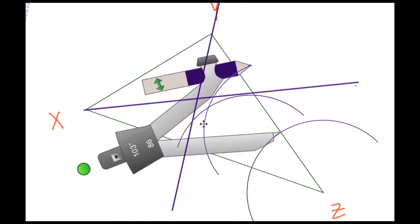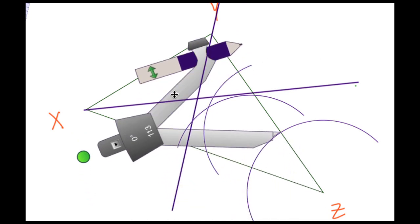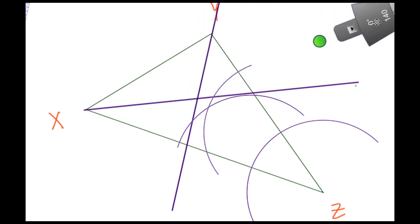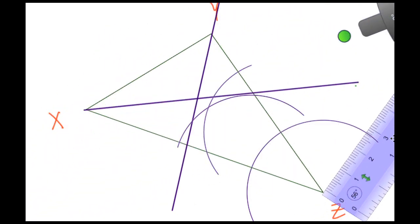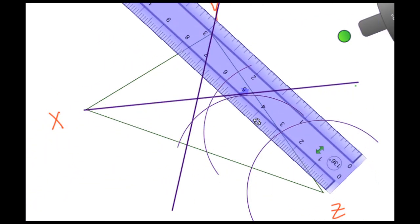Let's get this protractor tool out of the way, and now back with the straight edge. Place this position here at the vertex to get that lined up.